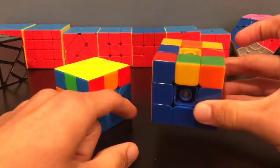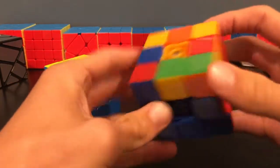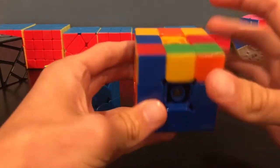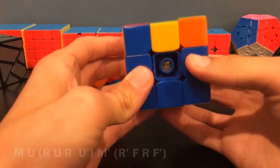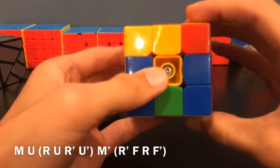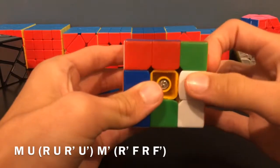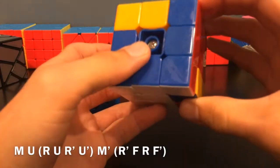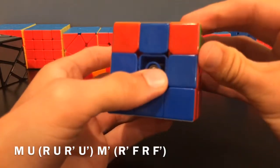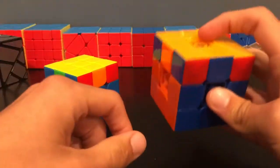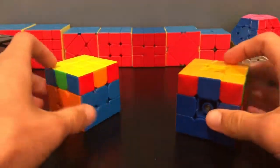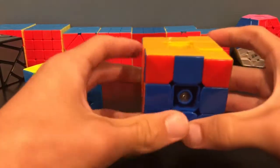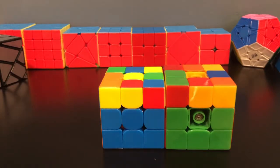This one starts in a very similar way. This is when you have two bars of two and two corners facing up at the back, or two blanket corners. With these held in the back, you'll do this algorithm: M U R U R' U' M' R' F R F'. As you can see, this one's very similar, but instead of doing the R-wide move at the end, you just bring the middle up and then do a sledgehammer.